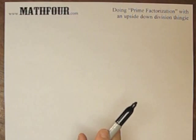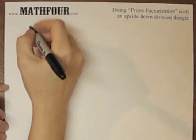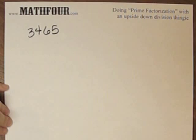We're doing prime factorization with the upside-down division thingy, and we're going to use 3465 to factor into primes.